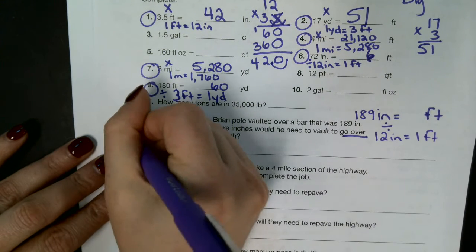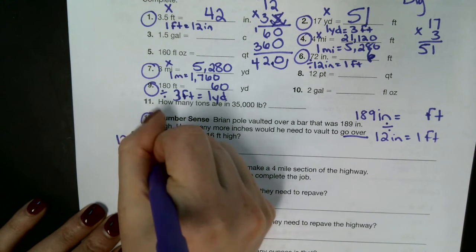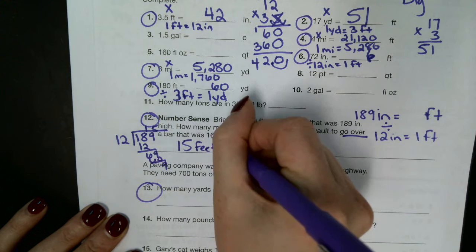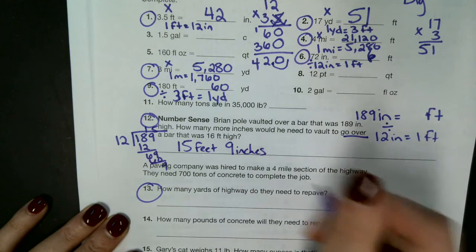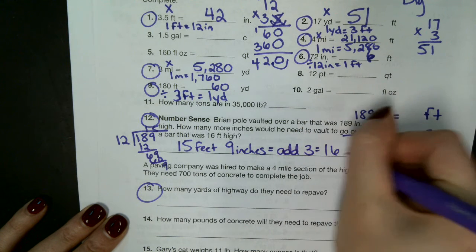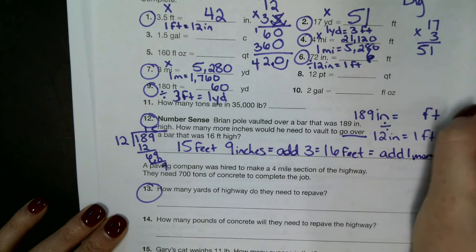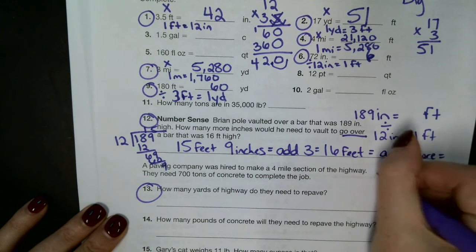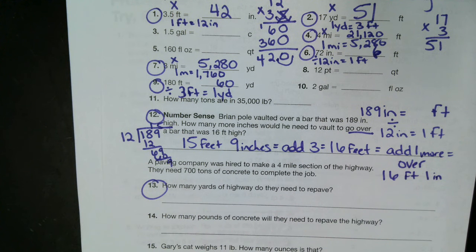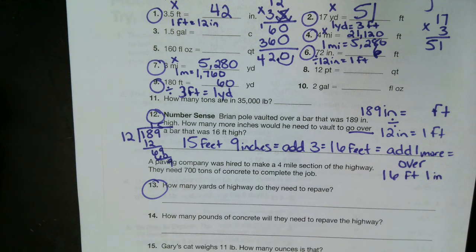So if we were to solve this out, I'm going to do it on this side. 12 goes to 189. Let's solve it. So right now we have 15 feet and nine inches. So to get to 16 feet, we have to add three more inches. But that's not right, is it? We need to get over it. So to get over it, add one more inch to get over, which is going to be 16 feet and at least one inch. At least to get over it. Because if we get to 16 feet, we'll hit the bar. We don't want to hit the bar. We want to go over the bar.